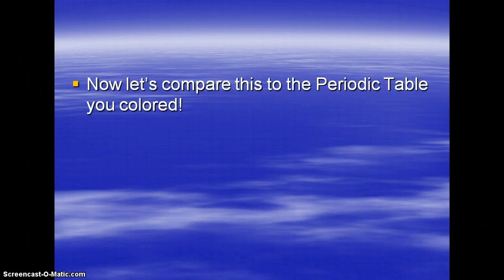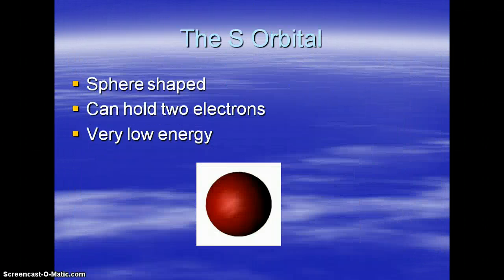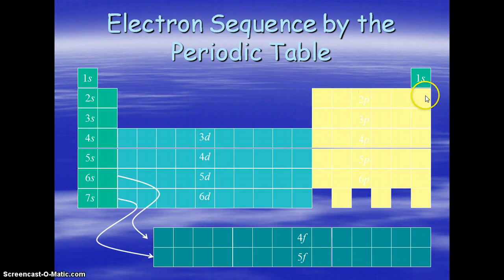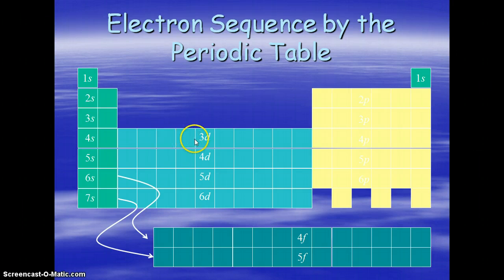Now if you go back and compare this to the periodic table, here's our S orbital. If you remember, there are 2 electrons per S orbital — 1, 2 boxes. Here's the P's — P had 6 total electrons per energy level, and if you count across: 1, 2, 3, 4, 5, 6. Here are our D's — if you count across the D's: 5, 6, 7, 8, 9, 10 — the D's match up perfectly with the number of electrons. And for F, if you count it all the way, it coincides with the number of electrons. So the pattern matches perfectly.